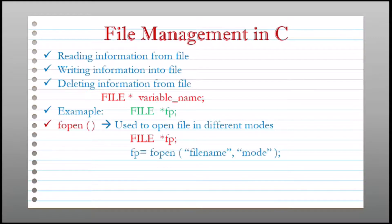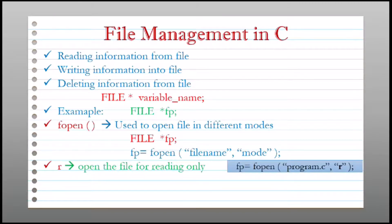The first mode is r. "r" opens the file for reading only. When you write r in double quotes as the mode, you can only read the content present in that file. In the example you can see fopen takes two arguments — the file name and the mode r — meaning this file is opened just to read the content present in it.